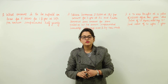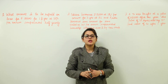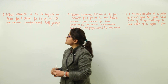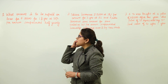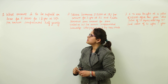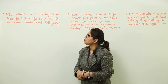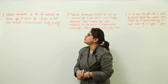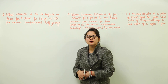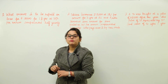Let's move on and solve some questions based on compound interest and simple interest. The first question is: what amount is to be repaid on a loan of Rs. 12,000 for 1 and a half years at 10% per annum compounded half yearly?